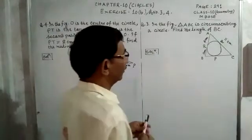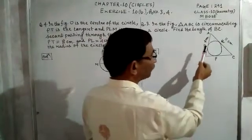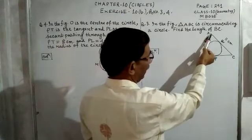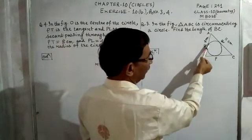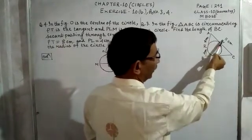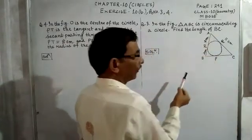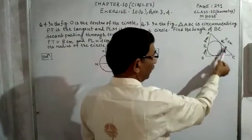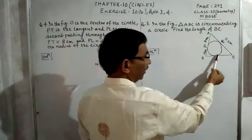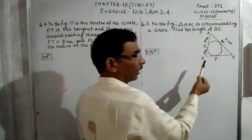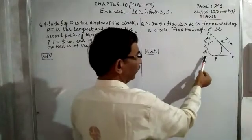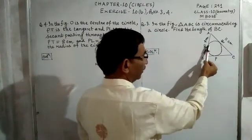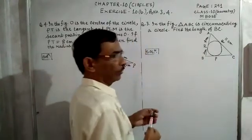We will apply our same procedure. From point A, AR is a tangent and AQ is a tangent, so these two tangents are equal. Similarly, from point C, CQ is a tangent and CP is a tangent, so these two are equal. And from point B, BP is a tangent and BR is a tangent, so they are equal.